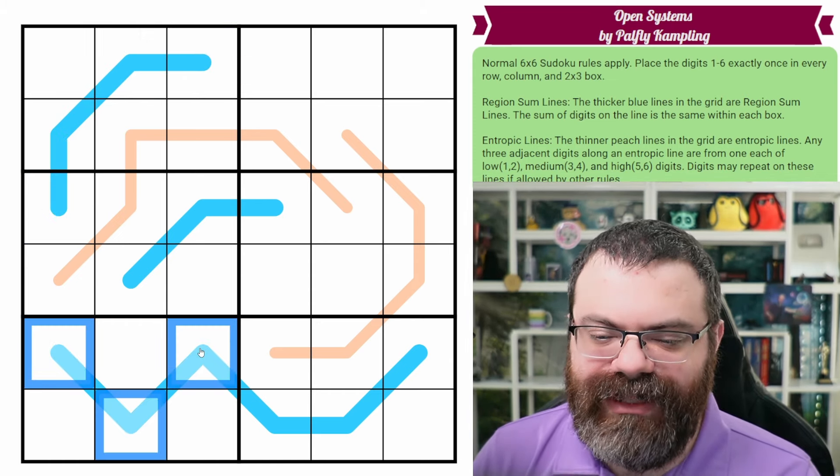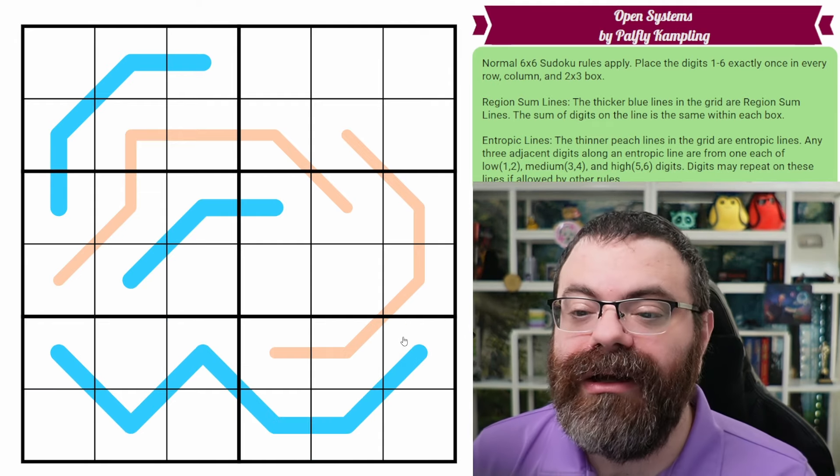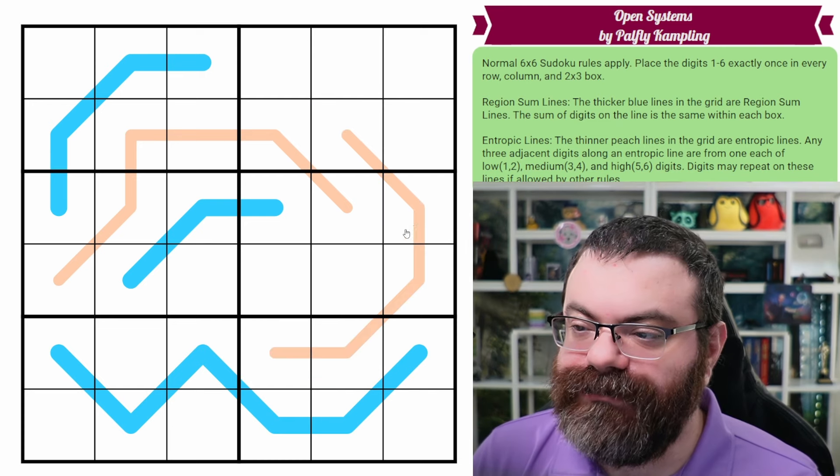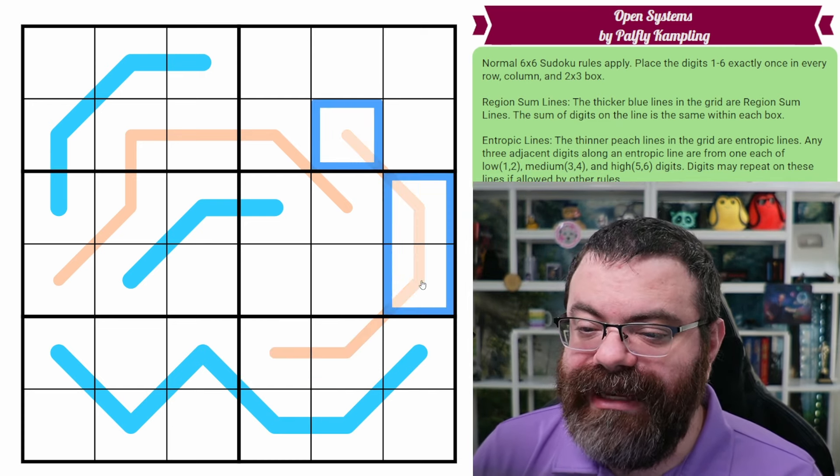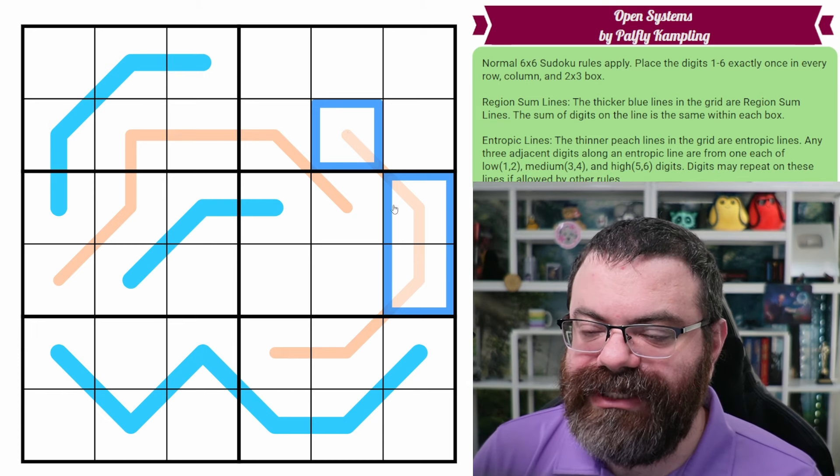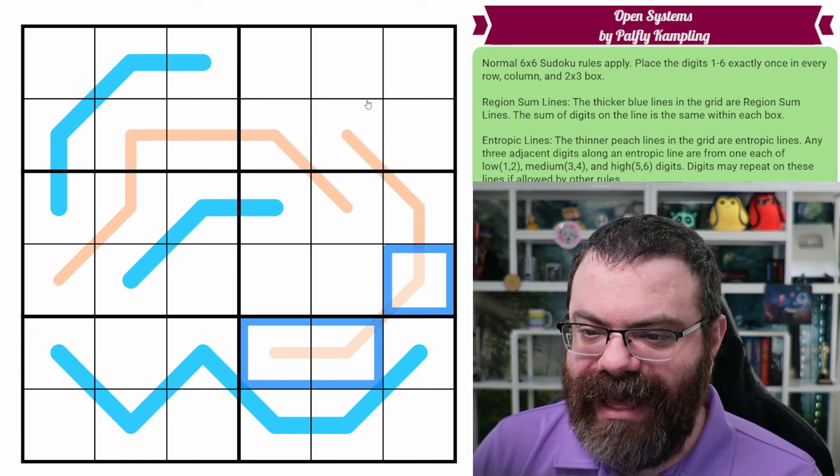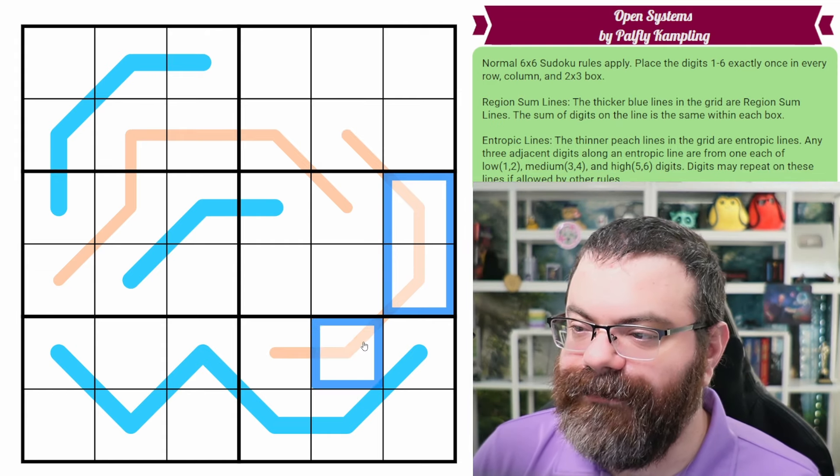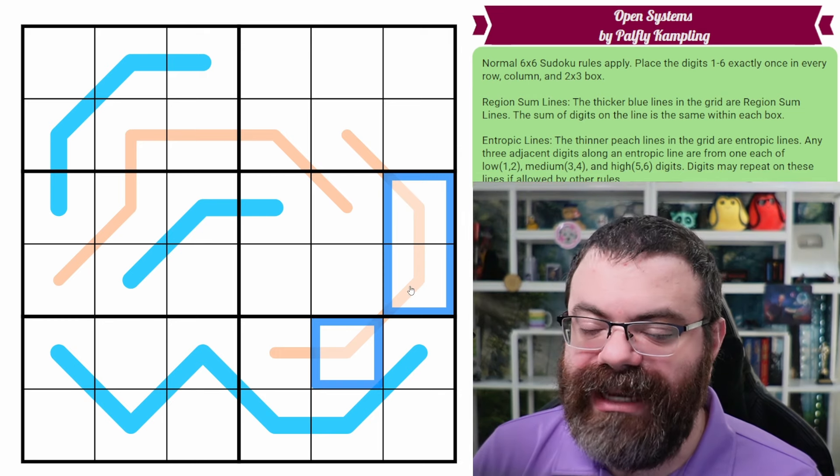We also have these sort of peach, thinner peach lines in the grid. These are entropic lines. So you take any three adjacent digits on the line, like these three, these three, these three, the overlapping sets of three digits. And no matter which three you highlight, whichever three you look at, there's going to be one of each of a low, medium, and high digit.